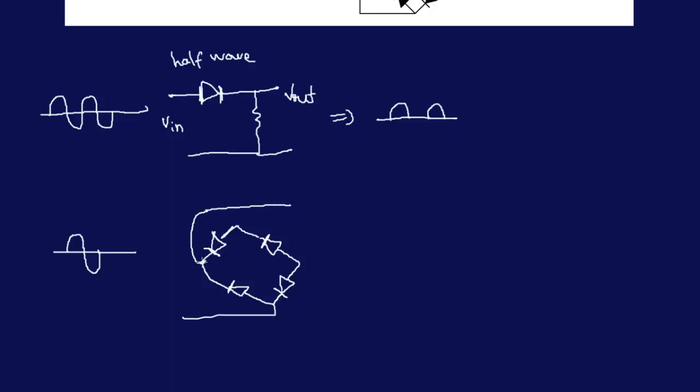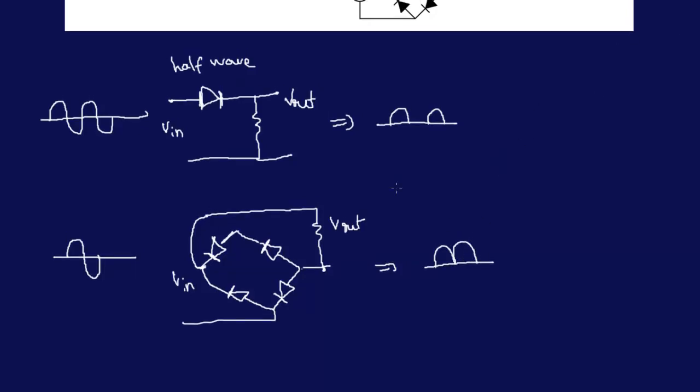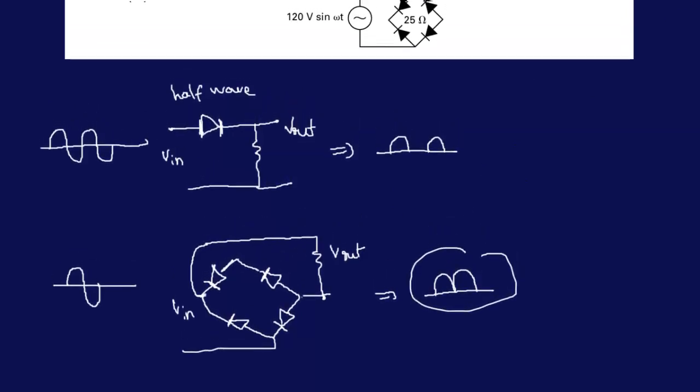That's why you get a signal that—this is V in, you have a resistor, and V out. Since the current goes in the same direction, you have a full-wave but only the same direction, not down. That's what your signal looks like with a full-wave rectifier, and that's what we're dealing with here.